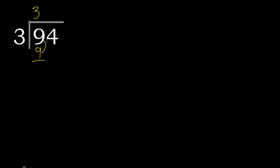9 minus 9 is 0. Next, bring down — eliminate the 0 on this side. Bring down 4.